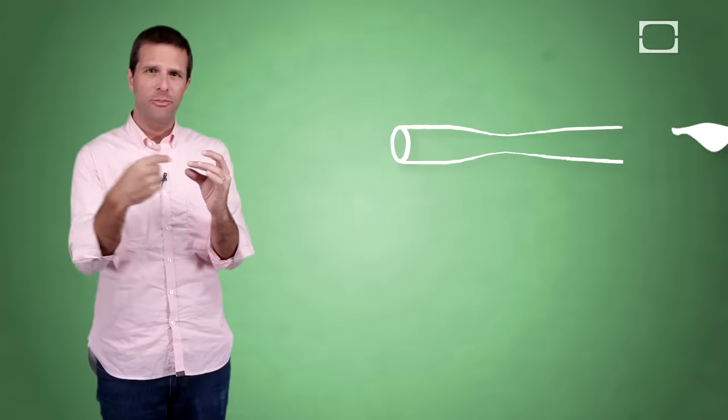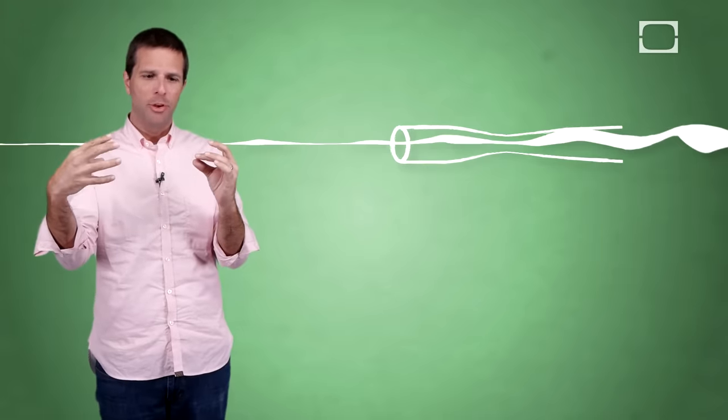After it goes through the pinch, it becomes compressed. And as its velocity speeds up, the pressure on the other side of the tube actually decreases. Keep that in mind, that's the Venturi effect.